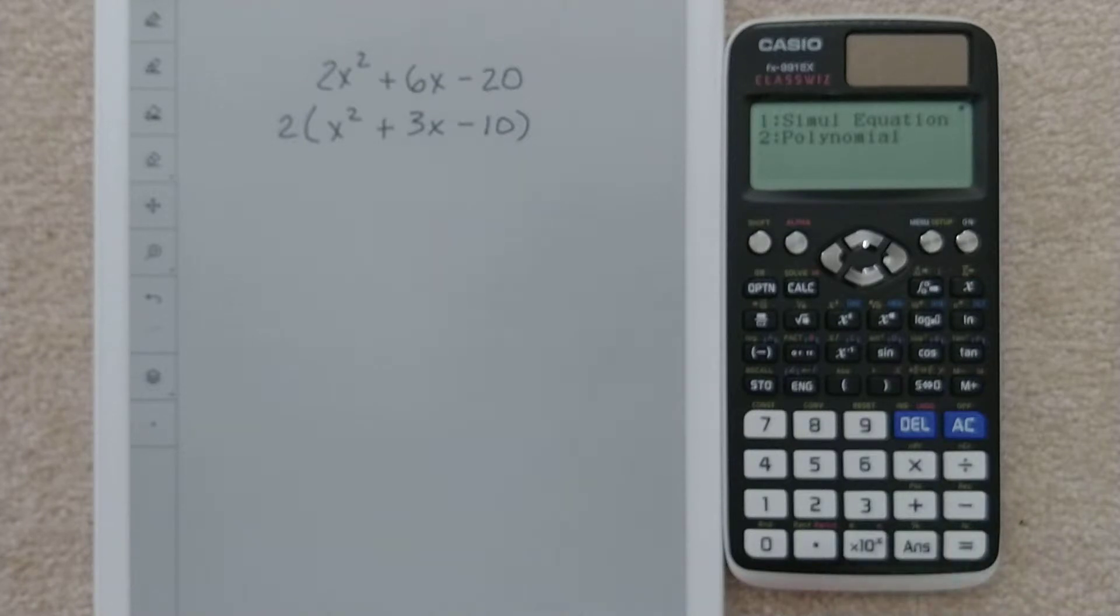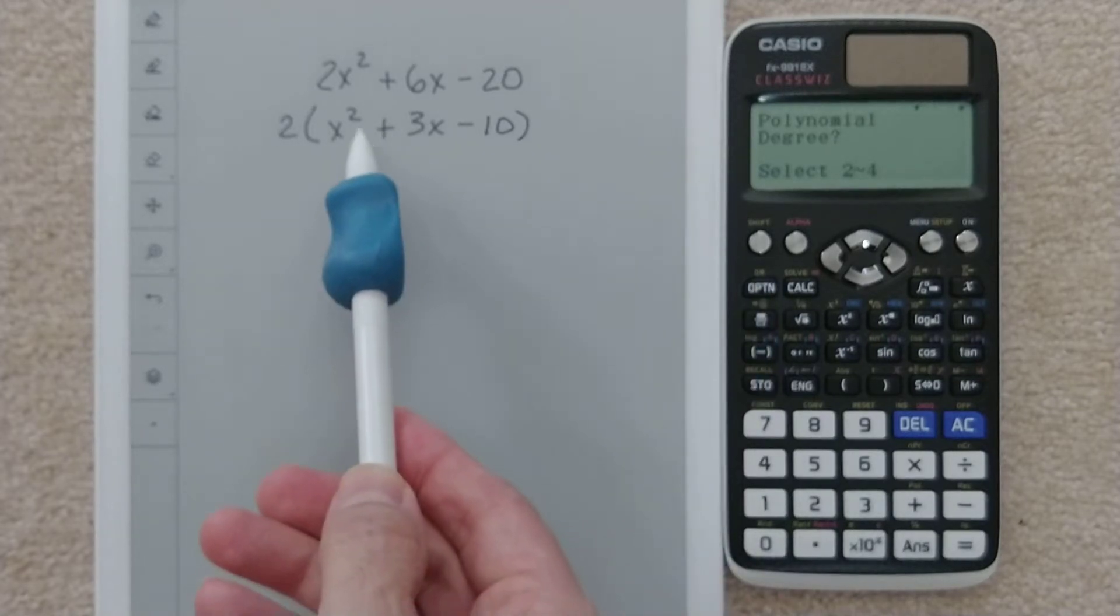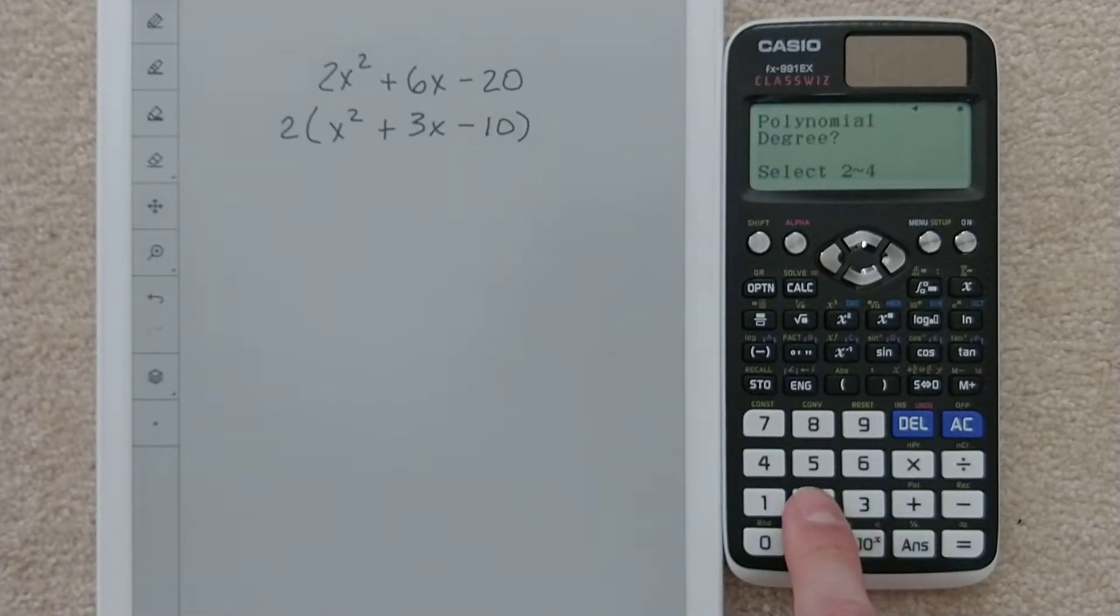I want to do a polynomial, so I'm going to type a 2. What is the degree of this equation? All that means is what's the biggest exponent? 2.